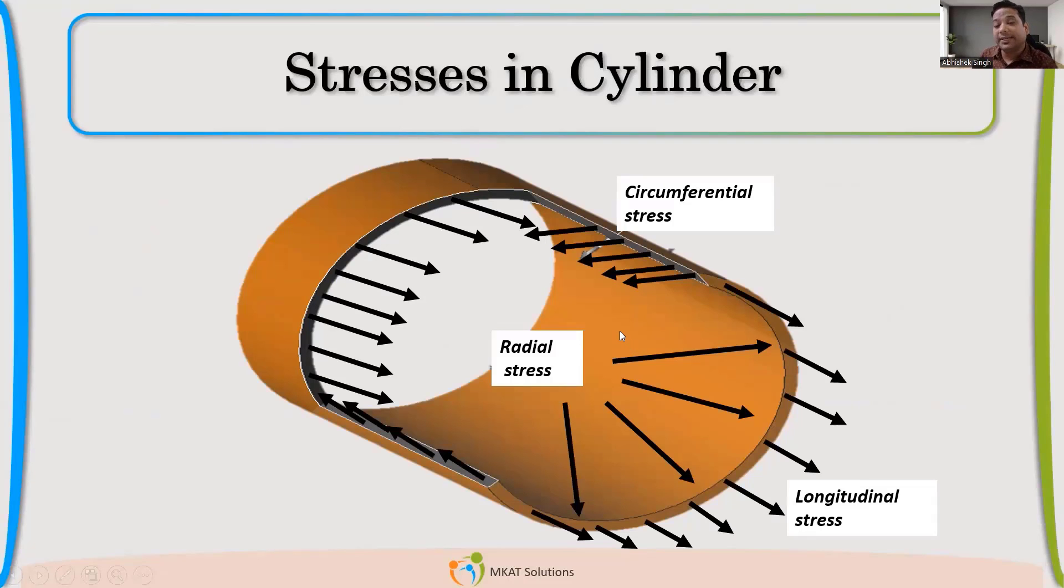There are three different types of stresses. We are talking about stresses generated due to pressure, internal pressure. Because UG-27 is about designing of a cylindrical shell for internal pressure. Internal pressure raises three types of different stresses in a pressure vessel: circumferential stress, which is in the circumferential direction; longitudinal stress, which is in the length direction, along the axis of the cylinder.